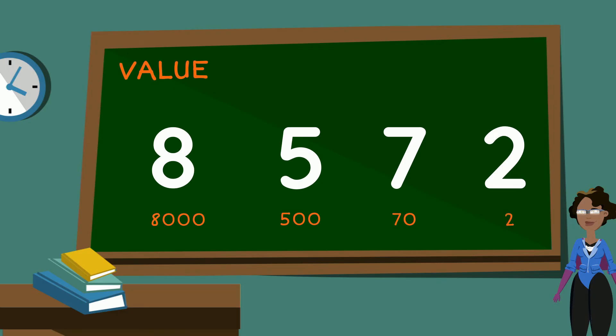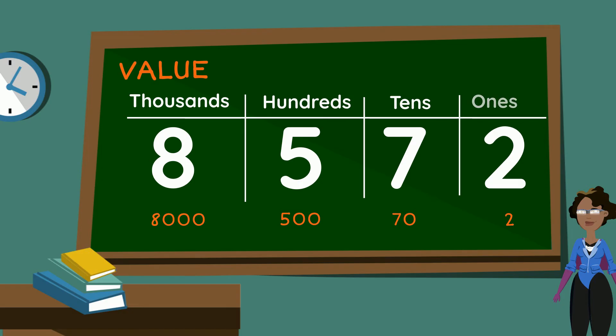If you notice, the 8 is in the thousands column, the 5 is in the hundreds column, the 7 is in the tens column, and the 2 is in the ones column.